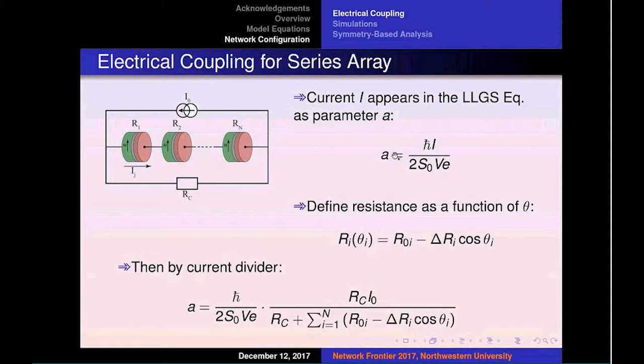One can show that parameter A in the LLGS equation is just proportional to the input current, to the polarized current. This formula for the resistance on each individual ith nano-valve comes from the discovery of the giant magnetic resistance effect.